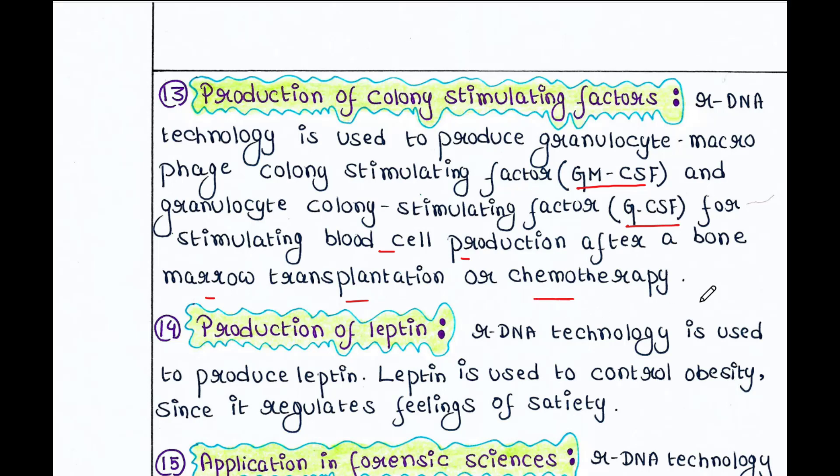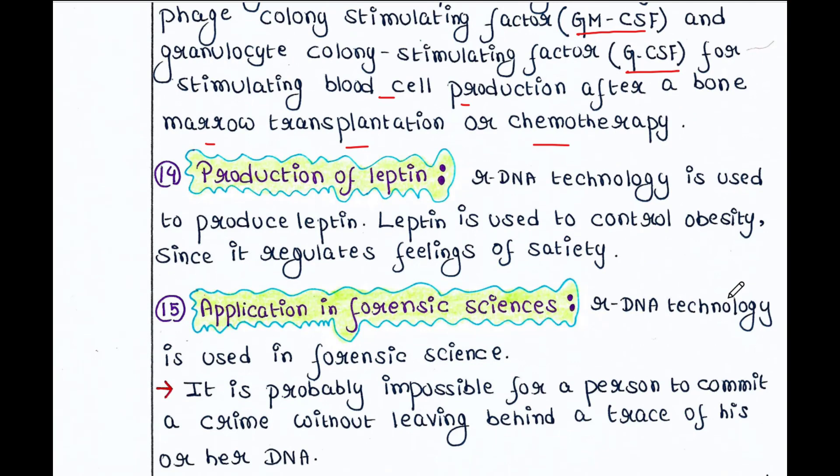GM-CSF and G-CSF are used for stimulating blood cell production after a bone marrow transplantation or chemotherapy. After these procedures, our body requires more blood cells. In order to achieve that, we need to deliver GM-CSF, G-CSF, etc. to the person, and we can clone these genes in vectors.